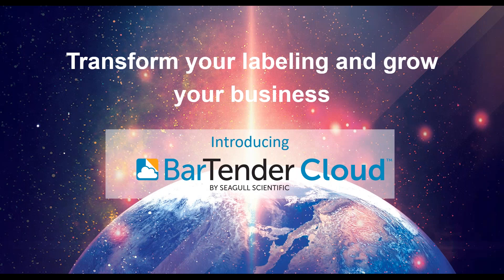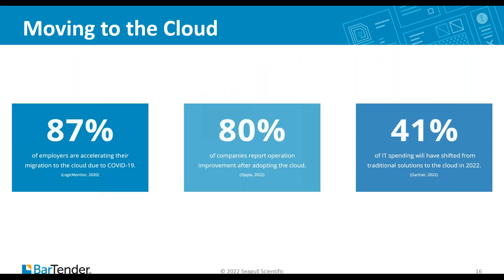Today I'm proud to announce our newest product release this year: Bartender Cloud. We've always looked to where our customers' needs are. Many of them are looking at digital transformation of their IT and labeling infrastructure. They are seeing clear advantages with the cloud, with 87% accelerating their migration to the cloud, especially coming out of the recent pandemic and its wide-ranging impact. 80% of companies see operational improvements in areas where they are adopting the cloud. And there is transformational change in IT spending, as 41% of total IT spending has shifted from traditional hardware and software to the cloud. The time is right for taking the leading labeling solution to the cloud.